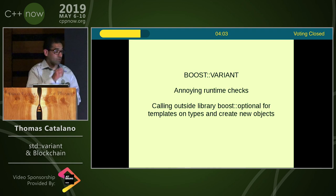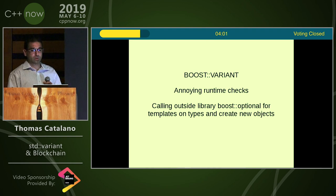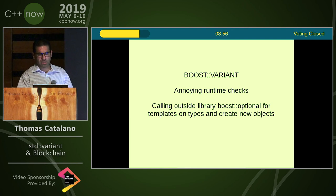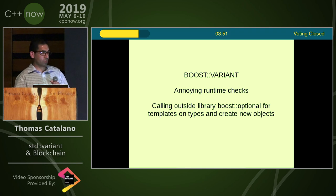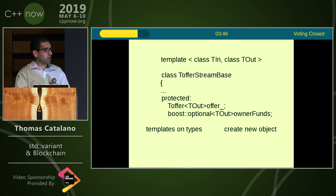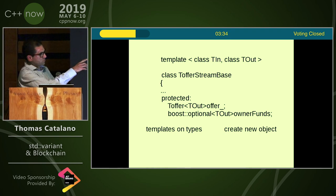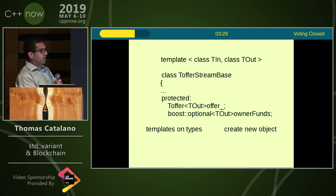Prior to this, we used libraries such as boost::variant and boost::optional — outside libraries — within which we create templates of types and then create objects that are going to be used to lock the cache. An example of this would be calling the boost::optional type for owner funds, where it would have to create a new object.